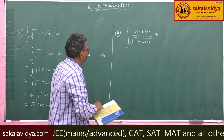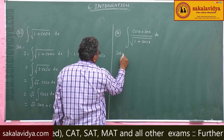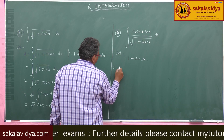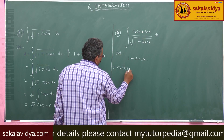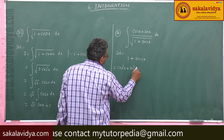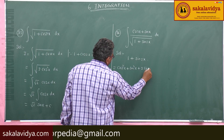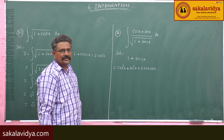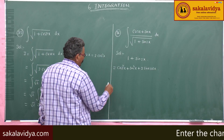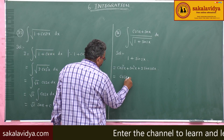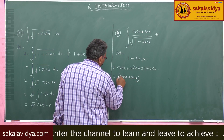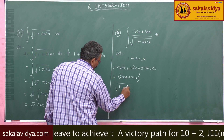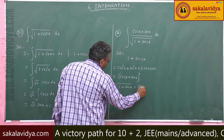First, let us simplify 1 plus sin 2x. We replace 1 with the trigonometric identity cos squared x plus sin squared x, and sin 2x becomes 2 sin x cos x. This expression is in the form a squared plus b squared plus 2ab, so it equals (cos x plus sin x) whole squared.